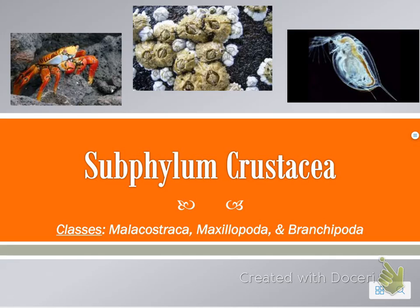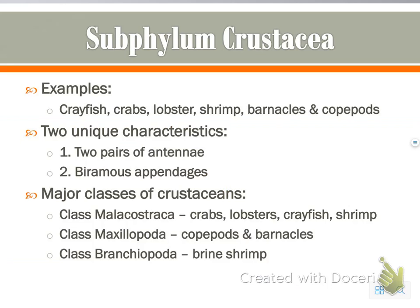Next we have subphylum Crustacea, with three separate classes to look at. Examples include crayfish, crabs, lobster, shrimp, barnacles, and copepods — you've probably heard of, or eaten, the first four. They have two unique characteristics shared across the subphylum: two pairs of antennae, and biramous appendages, which we'll talk about more in a moment.